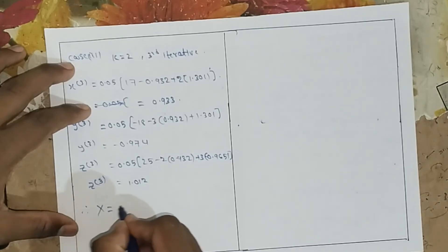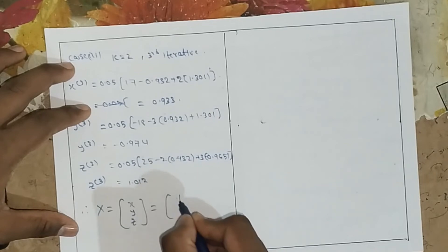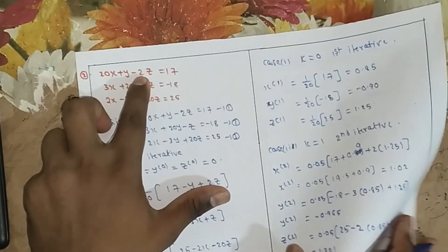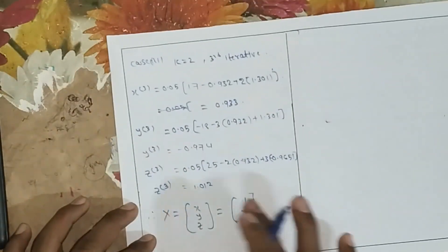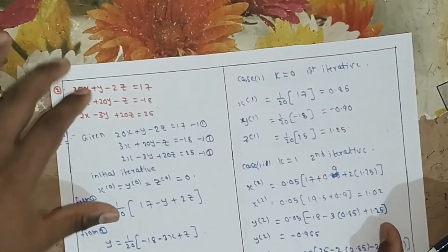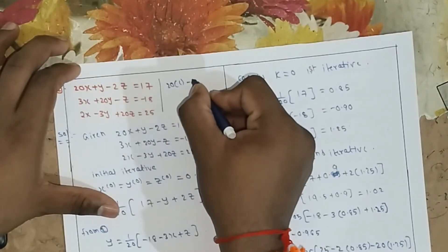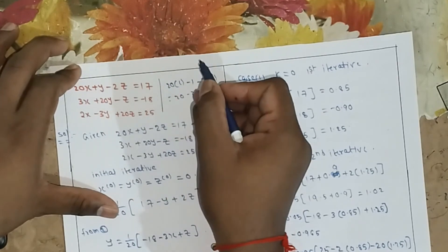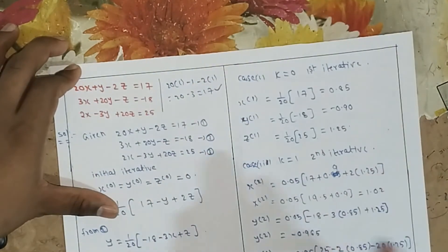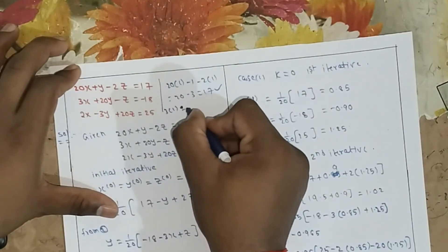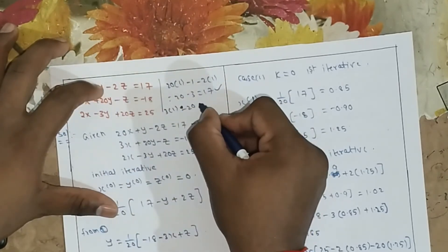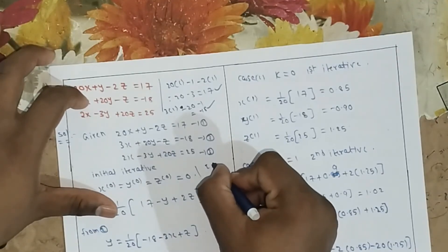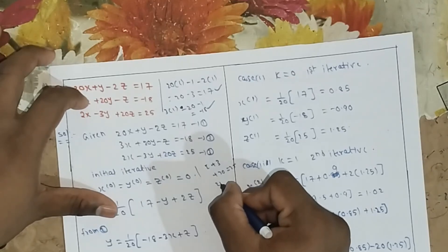So the solution is x equals 1, y equals minus 1, z equals 1. We can verify: 20 into 1 plus (minus 1) minus 2 into 1 equals 17. Also 3x plus 20y minus z equals 3 into 1 minus 20 into 1 minus 1, and 2x minus 3y plus 20z checks out as well.